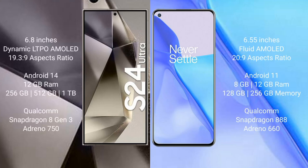Samsung Galaxy S24 Ultra comes with a 6.8-inch dynamic LTPO AMOLED display and aspect ratio 19.3:9. OnePlus 9 comes with a 6.55-inch flat AMOLED display and aspect ratio 20:9. Samsung Galaxy S24 Ultra runs on Android 14.